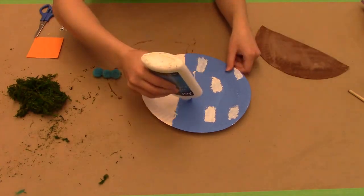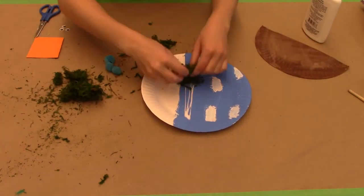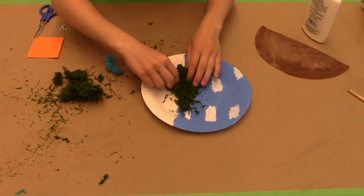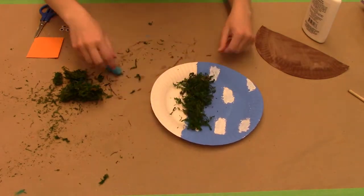Then you're going to grab some glue and put it all along the top edge where the nest will sit and then attach your fake moss or whatever you're wanting to use to fill your bird's nest with.